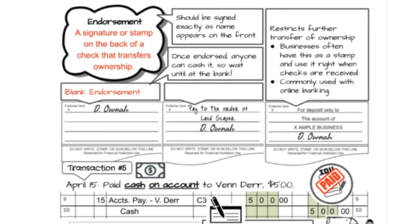The first kind of endorsement is called a blank endorsement — that's just signing it. Someone writes you a check, you sign your name on the back, and take it to the bank to cash or deposit it. The next kind is a special endorsement. If a check is written to you, you can give that money to someone else without turning it into cash first. You write the words 'pay to the order of,' that person's name, and then sign your name. So if the check was written to Diona but she wants to give it to Landscaper, that's what a special endorsement accomplishes.